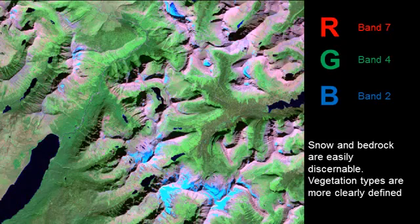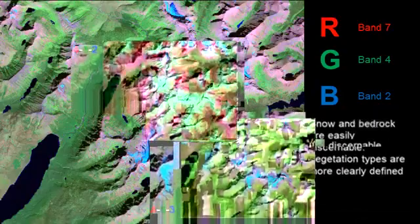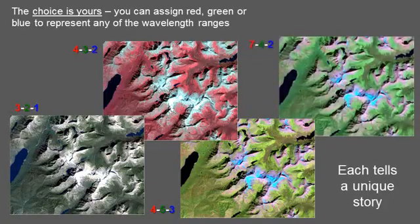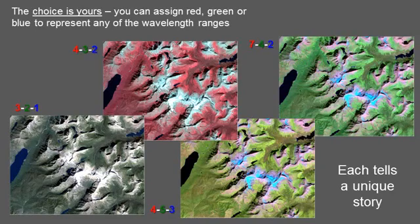When it comes to band combinations, ultimately the choice is yours. It depends on what message you're trying to get across. Are you trying to present the natural landscape, or provide an indication of vegetation health? Perhaps you're interested in identifying specific features on the landscape, such as glaciers, urban areas, or disturbed sites. Each band combination tells a very unique story — you have to choose what story is yours.